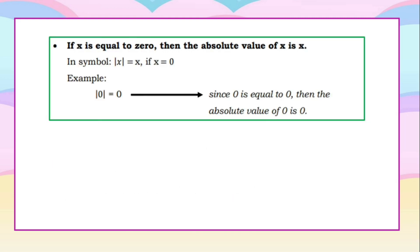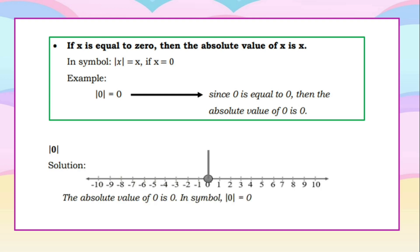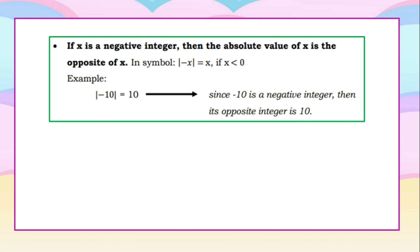For our second case, if x is equal to 0, then the absolute value of x is 0. Since 0 is equal to 0, the absolute value of 0 is 0. Starting from the origin, we don't move at all, so the absolute value of 0 is 0. For our third case, if x is a negative number, then the absolute value of x is the opposite of x. For example, the absolute value of negative 10 is equal to 10. Since negative 10 is a negative integer, its opposite is 10.